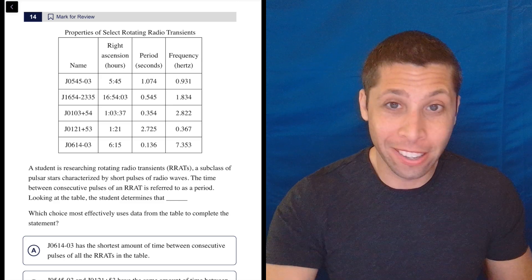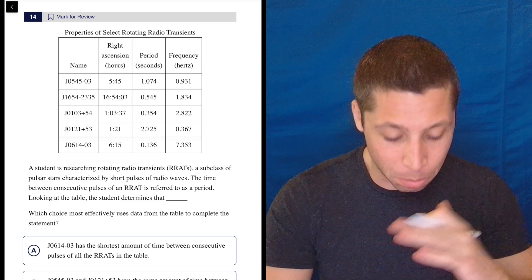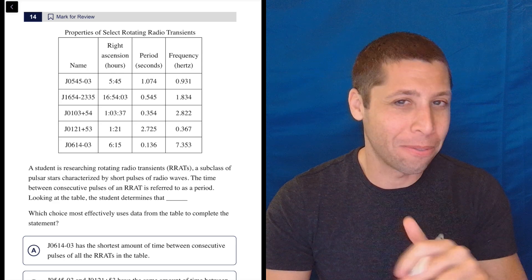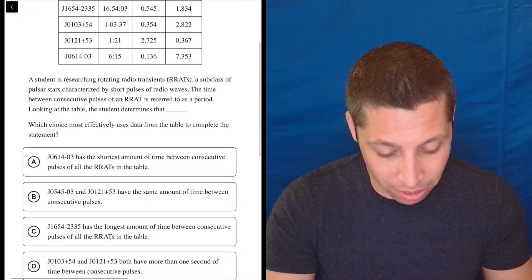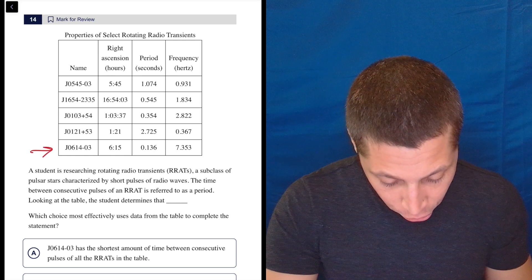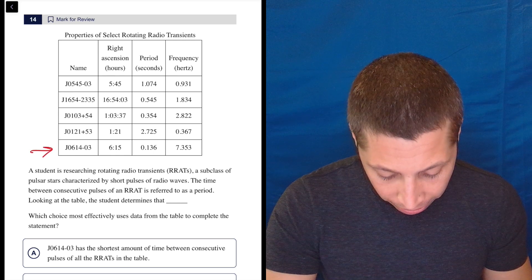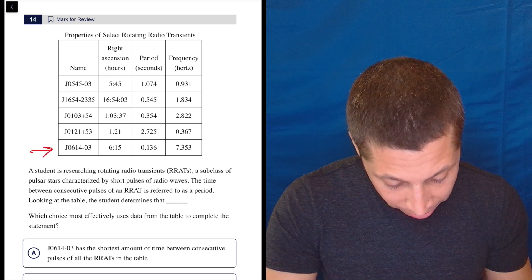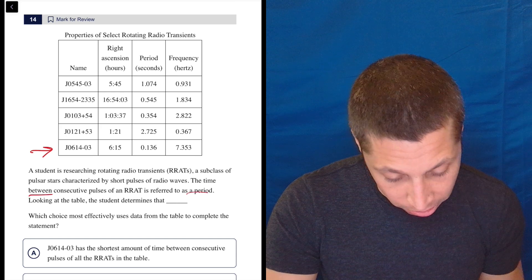Okay, like literally, this would go anywhere. This is just purely, I can tell, about the facts and the truth of the numbers. So J0614, so that is here, has the shortest amount of time between consecutive pulses. So that's the period, right? Between consecutive pulses of the period.